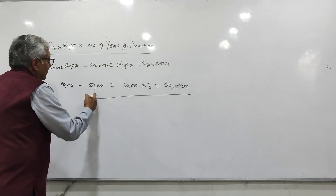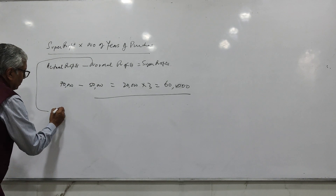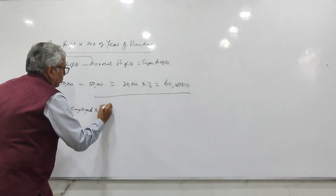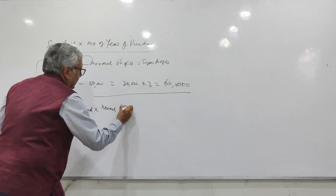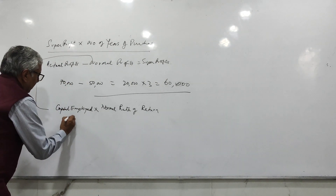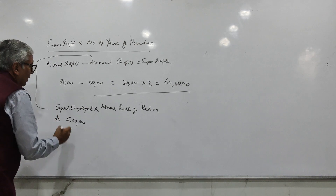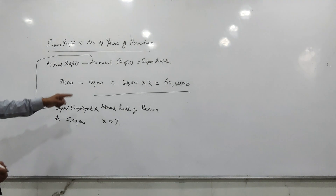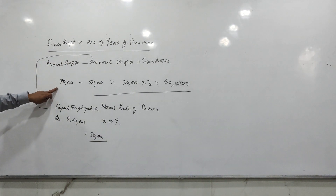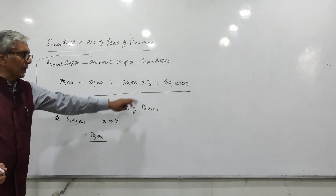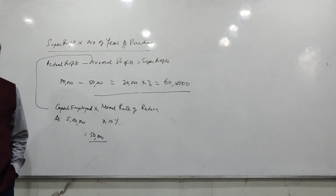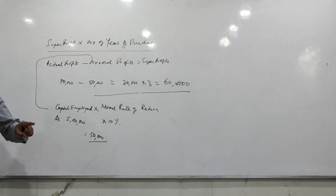Normal profits are calculated as capital employed multiplied by the normal rate of return. So we get normal profit of 50,000 rupees. Actual profits are 70,000, giving super profits of 20,000. Multiplied by the number of years of purchase, that is 60,000. This is the most appropriate method of calculating goodwill. As I told you, we can never have the exact value of goodwill, but by this method we get the closest value.